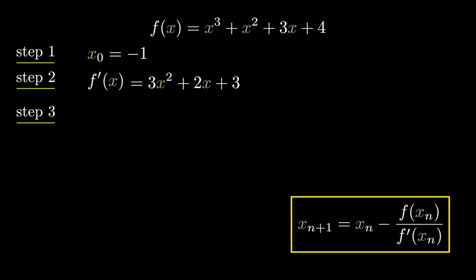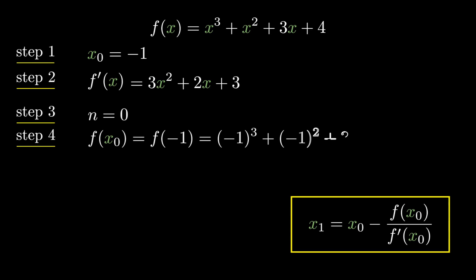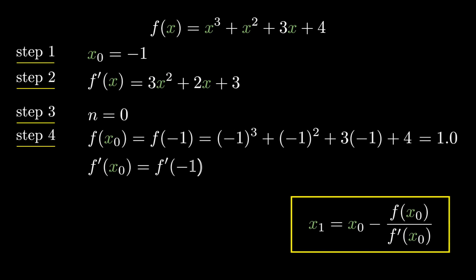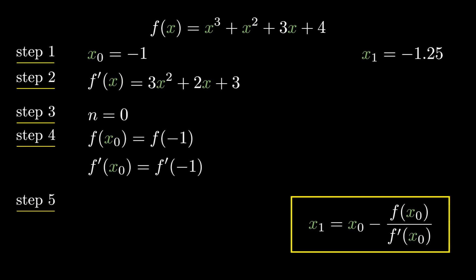Step 3: find x₁ by substituting n=0: x₁ = x₀ − f(x₀)/f'(x₀). Step 4: f(x₀) = f(−1) = 1, and f'(x₀) = f'(−1) = 4. Step 5: substituting these values, we get x₁ = −1.25. Since x₀ = −1 and x₁ = −1.25, they are not the same, so let's continue with our iteration.